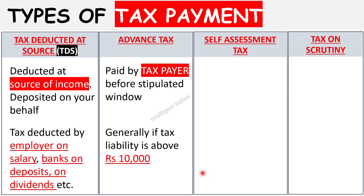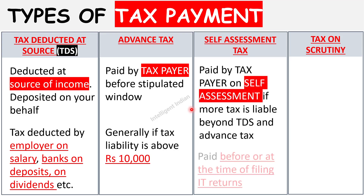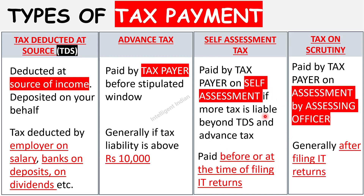Third is self-assessment tax. If a person needs to pay more tax beyond the advance tax paid or TDS — or if the person misses advance tax — then at the time of filing the income tax return or before that, the person can pay the additional tax by self-assessing how much is due. This is called self-assessment tax. Finally, tax on scrutiny: if after filing ITR, the assessing officer from the income tax department finds that you need to pay more taxes, they will send you a notice asking for more tax. This is called tax on scrutiny or tax on regular assessment. So, four different types of tax.